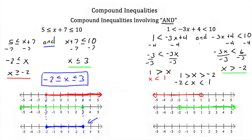Now to get our final solution, we combine these two graphs. Our key points are at negative 2 and at positive 1. These are both open circles, so we put an open circle at both points. The only x values that satisfy both of these inequalities are the points between them. So we shade in everything between negative 2 and positive 1. This is our final solution of this compound inequality.